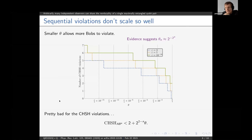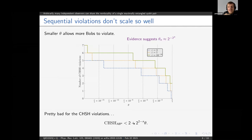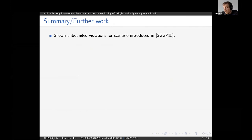In turn, this is quite problematic for the actual CHSH violations the Bobs will achieve. You can upper-bound the expected CHSH violation between Alice and BobN as 2 plus a term that decreases exponentially faster than n multiplied by θ. If θ is decreasing double-exponentially fast in n, then this term gets very small very quickly. So this may not be the best thing in practice.